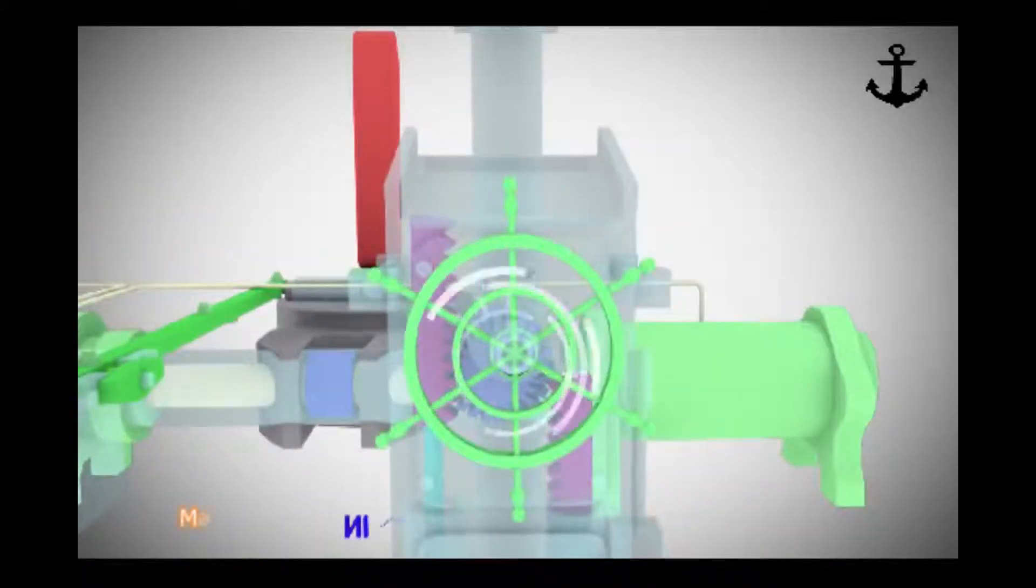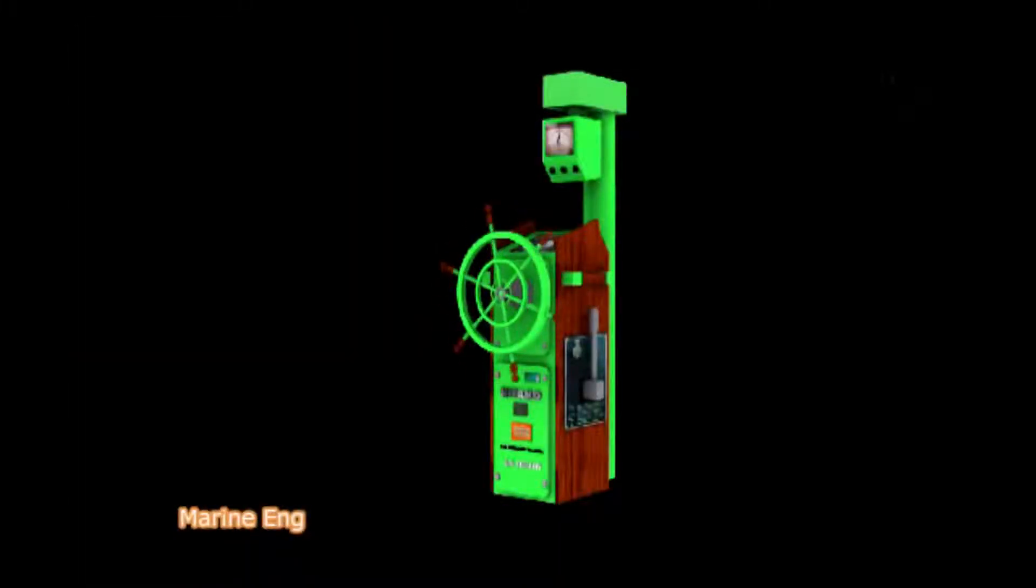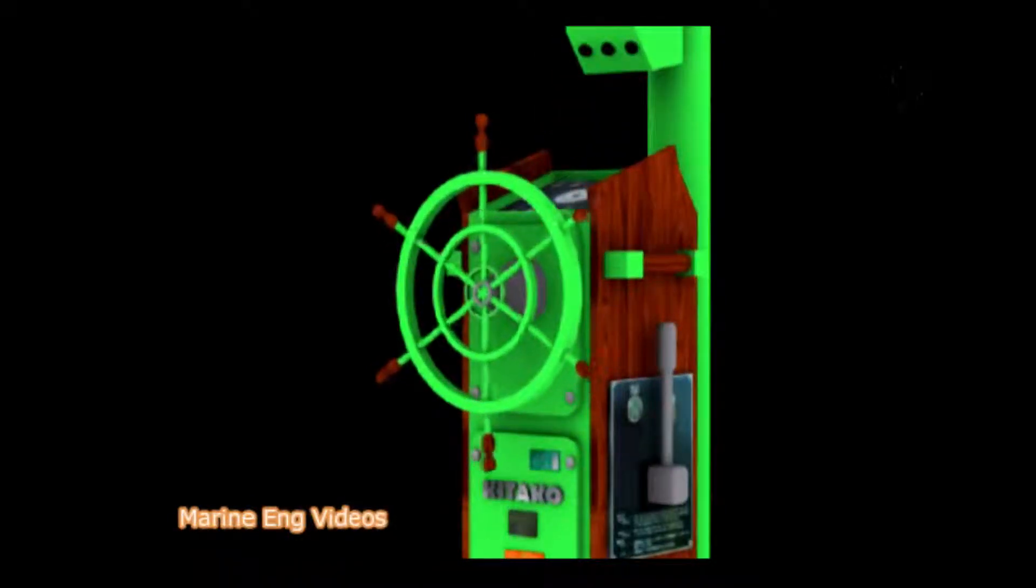Steering Gear. A steering gear is the equipment provided on ships to turn the ship to left port side or to right starboard side while in motion during sailing. The steering gear works only when the ship is in motion and does not work when the ship is stationary.